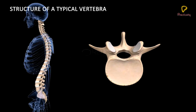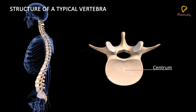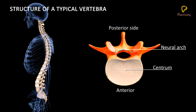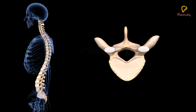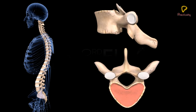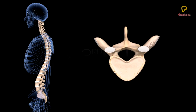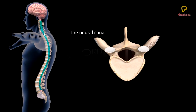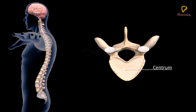A typical vertebra is a ring-shaped bone. It has a large disc-like flattened body called the centrum on the ventral or anterior side, and a neural arch on the dorsal or posterior side. In human beings, the centrum is flat at both ends without any concavities; hence the vertebrae are said to be of the amphiplatean type. The neural canal or vertebral canal occurs between the centrum and the neural arch, and the spinal cord passes through this canal.